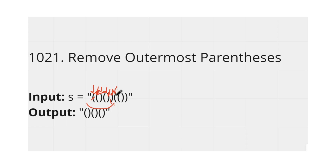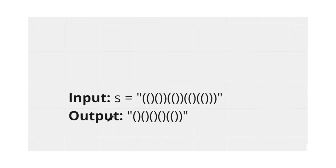The remaining part we store in our result. Then we start from the next pointer and reset the counter. The counter increments and decrements again for the next valid substring. We remove its first and last elements and add the remaining part to our result. We continue and return our result when the entire string has been processed.